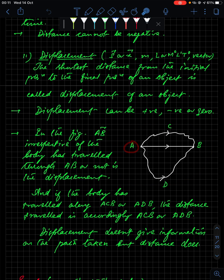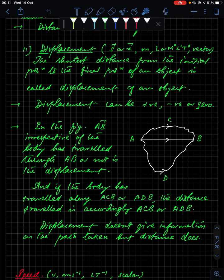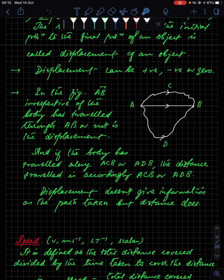A body starts journey from A to reach B taking two paths: ACB or ADB — it does not travel directly along AB. The distance traveled could be ACB or ADB depending on the path, but the displacement would be AB directly. If the body travels straight from A to B, then the distance traveled and displacement are the same. Displacement does not give information on the path taken; distance does.